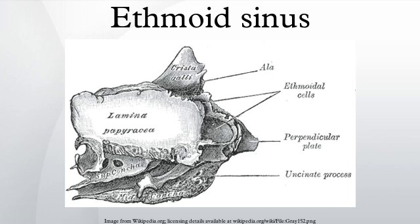In pathology, an ethmoidal carcinoma may spread superiorly, causing meningitis and cerebrospinal fluid leakage, or it may spread laterally into the orbit, causing proptosis and diplopia.